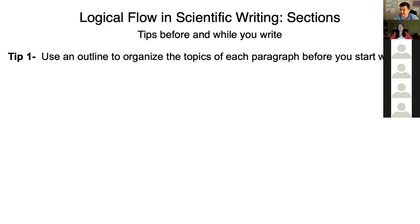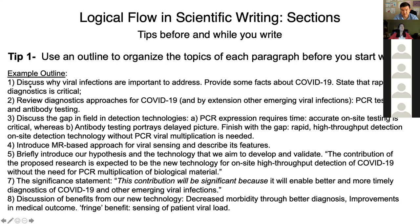I'm going to frame this scientific writing module in terms of tips — three tips for how to write sections that flow logically. The first is something we've already discussed: you saw that Ed used an outline to organize the topics of the background and significance section of our class proposal, the COVID-19 detection proposal. You can see there were just little phrases to alert Ed to what he wanted to write in each section, and he had eight points in his outline — so maybe eight paragraphs or eight subsections.